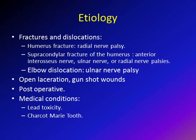The causes of nerve injury around the elbow include fractures and dislocations, such as humerus fracture that can cause radial nerve palsy, and supracondylar fracture of the humerus which can cause injury to the anterior interosseous nerve, the ulnar nerve, or the radial nerve. Elbow dislocations are also sometimes associated with ulnar nerve palsy. Open lacerations or gunshot wounds can cause nerve injuries, as can postoperative complications after surgeries around the elbow for internal fixation or osteotomy. There are also medical conditions such as lead toxicity and Charcot-Marie-Tooth disease.